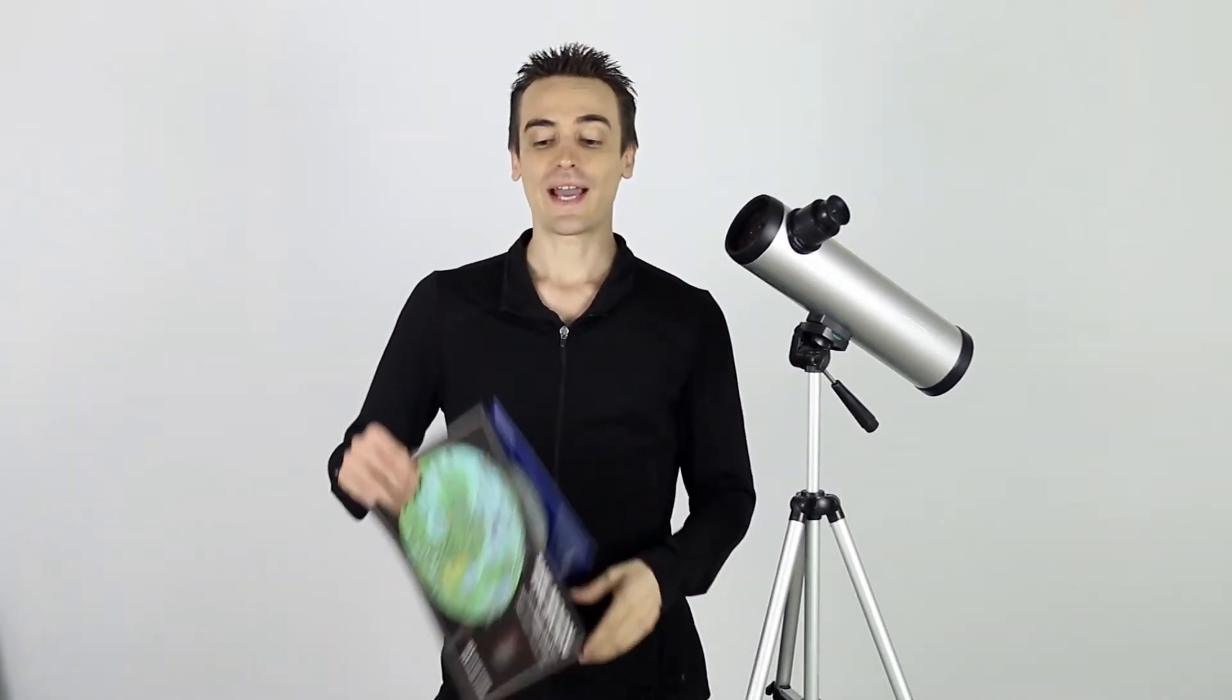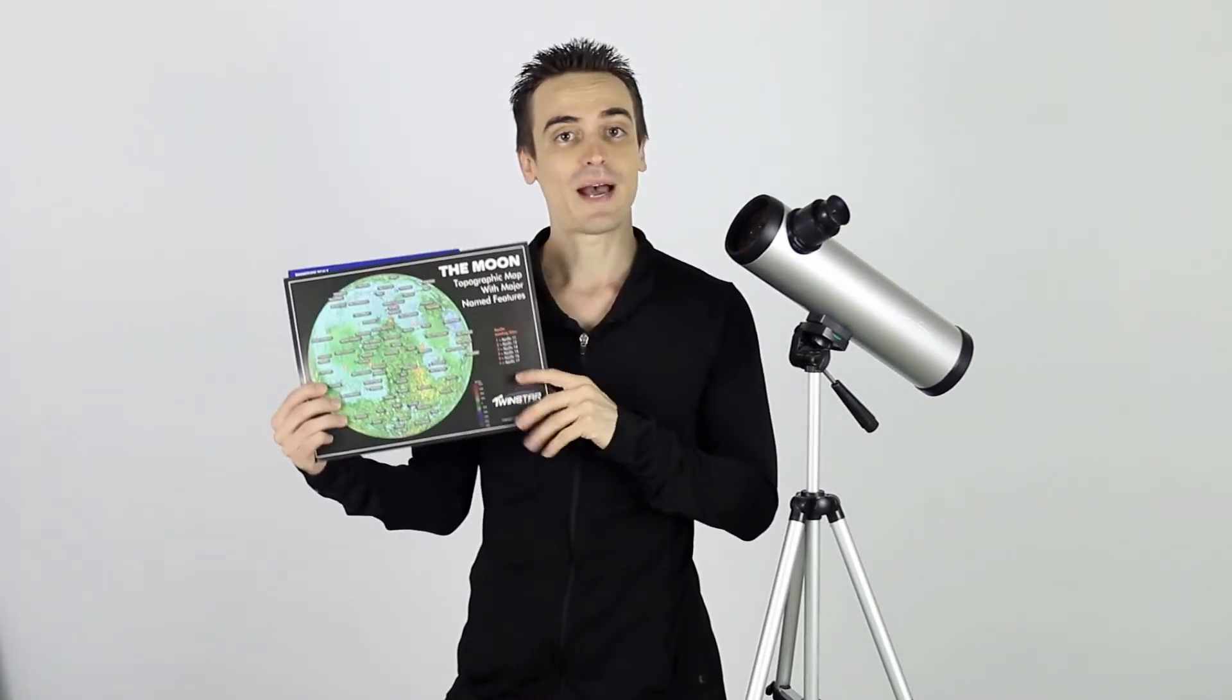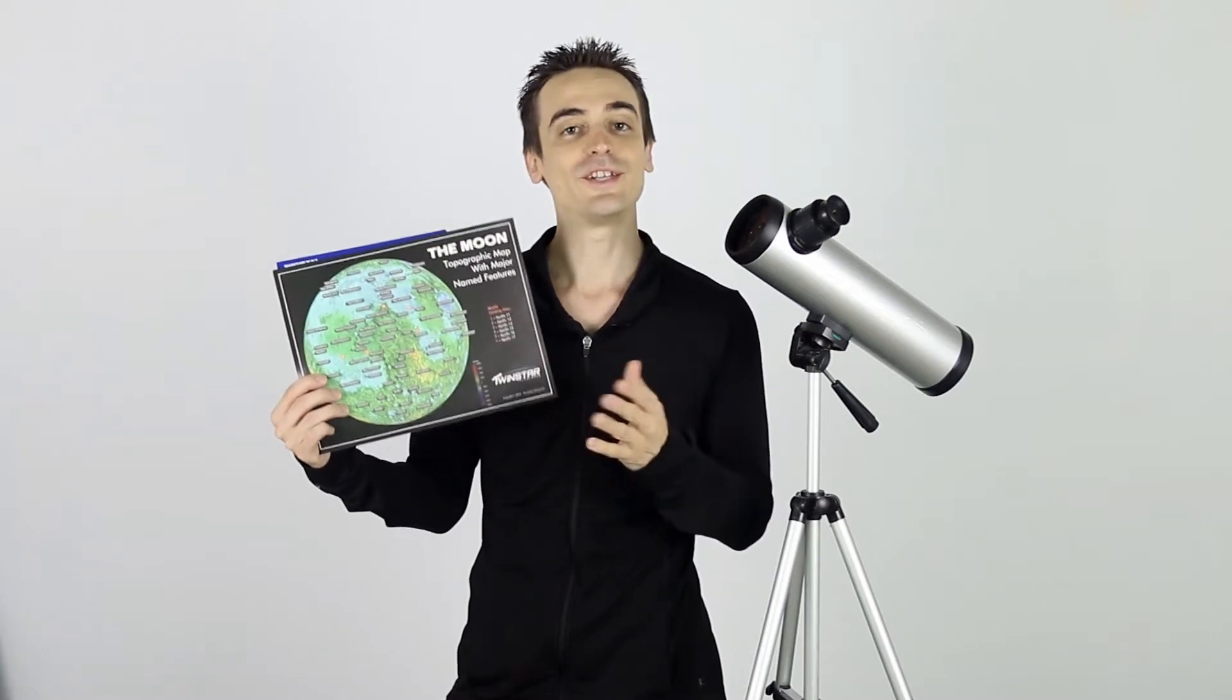This Cassegrain Telescope is ideal for viewing the moon, and with it you can enjoy searching for all of the major craters and other popular features of the moon. We do recommend adding a laminated lunar exploration map like this one here to your order to aid you in your discovery.